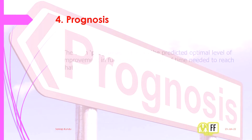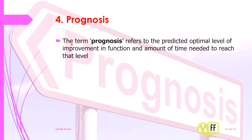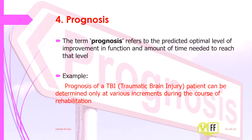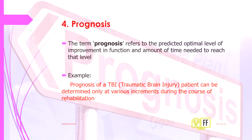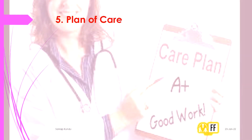Prognosis refers to the predicted optimal level of improvement in function and the amount of time needed to reach that level. It is a prediction — you cannot be certain of the route. For example, for a traumatic brain injury patient, the prognosis will be determined only at various increments during the course of rehabilitation.